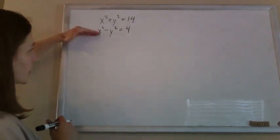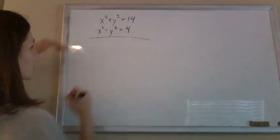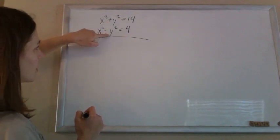All right, so two equations, two unknowns, substitution or elimination. Either one works, but this one's just begging you to eliminate, right? If you add these two, those are going to go away.